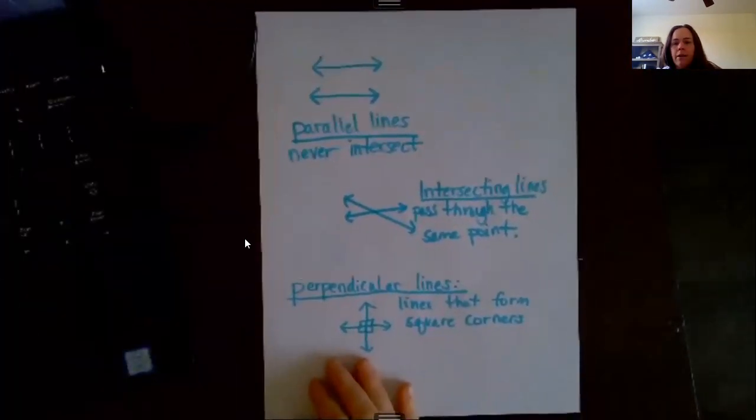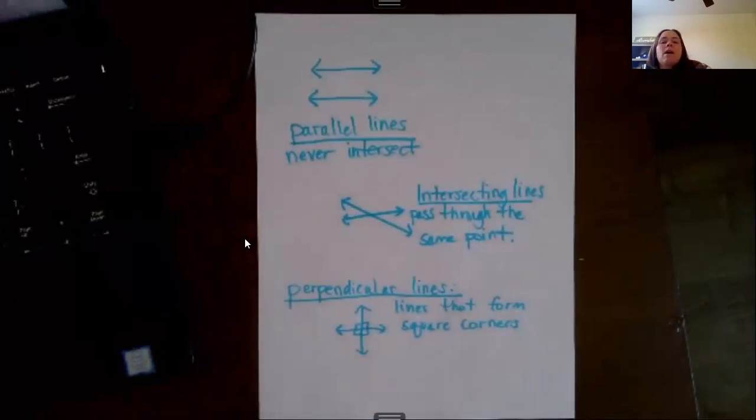So parallel lines—if you were in class you could do some fun projects, but we're not. Parallel lines are the same distance apart and they never cross. So they could be this way, but they're always the same distance apart and they never intersect or cross—that means the same thing.